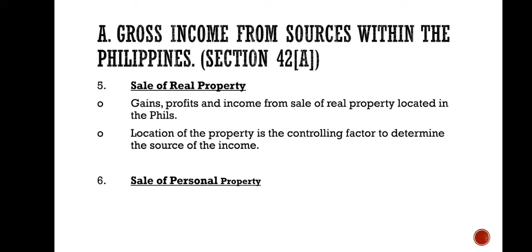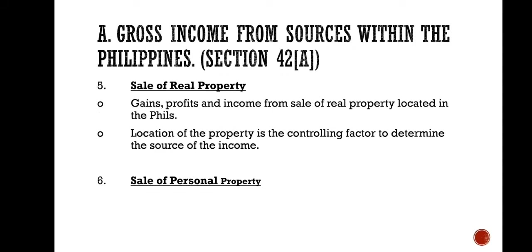On the other hand, for the sale of personal property, any income not falling under any of the six categories above is an income derived from sources outside the Philippines. Sale of personal property should be considered as gross income from sources within the Philippines. Any income not falling under any of the six examples given is an income derived from sources outside the Philippines.